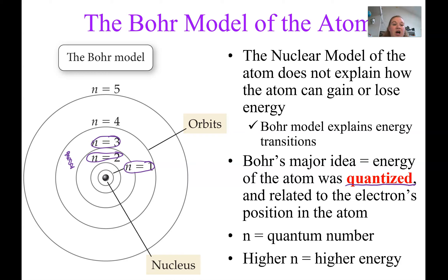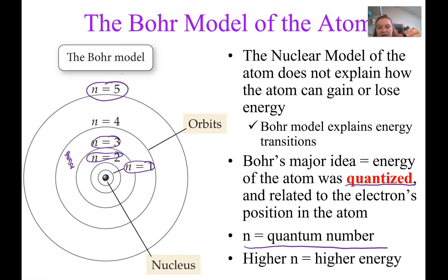Quantized means we've given it very specific values. Those n values are quantum numbers, and a higher level means higher energy. N equals 5 is the highest energy level in this model, meaning it's also the farthest from the nucleus and the biggest in size.